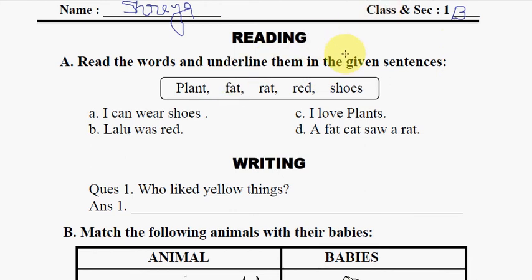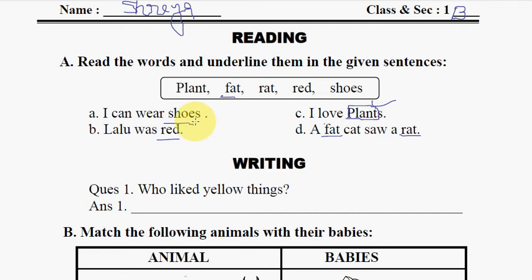Our Class 1 worksheet starts with: read the words and underline them in the given sentence. The Class 1 student will identify the word. For example, 'plant' — where 'plant' is written, the student has to identify it. The second word is 'fat,' then 'red,' and 'goose.' Students can find these words written in the worksheet. This is the first reading section, where students should read the words and identify them.